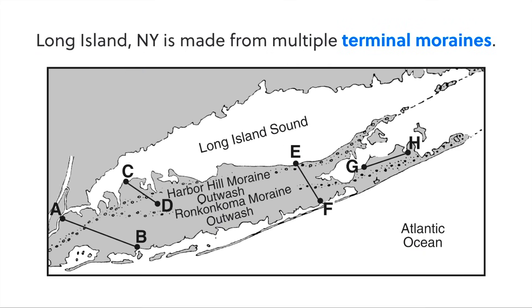Long Island, New York is a great example. It is formed as a result of multiple periods of glaciation, and therefore there are multiple terminal moraines — the Harbor Hill moraine, the Ronconca moraine, etc.